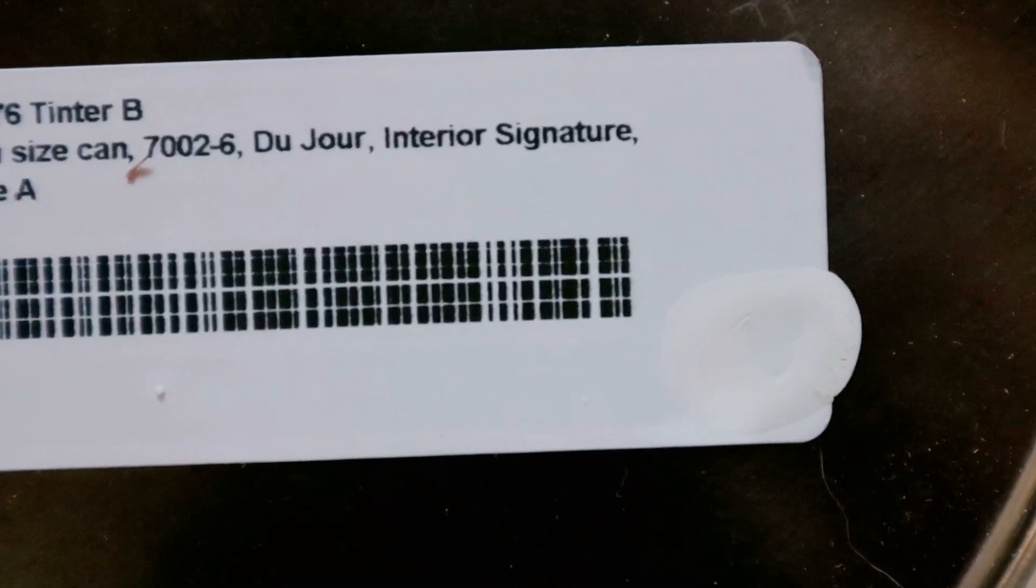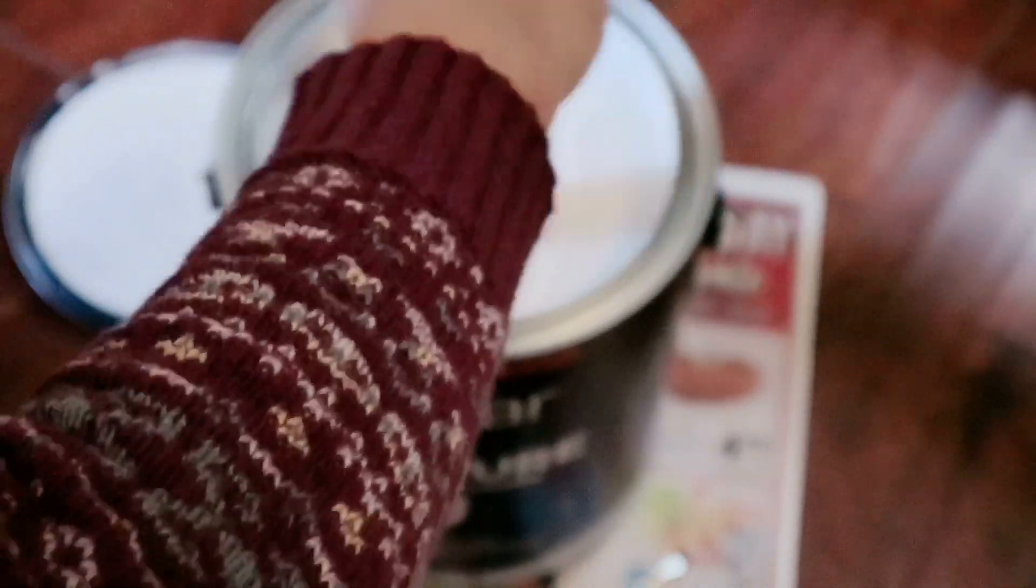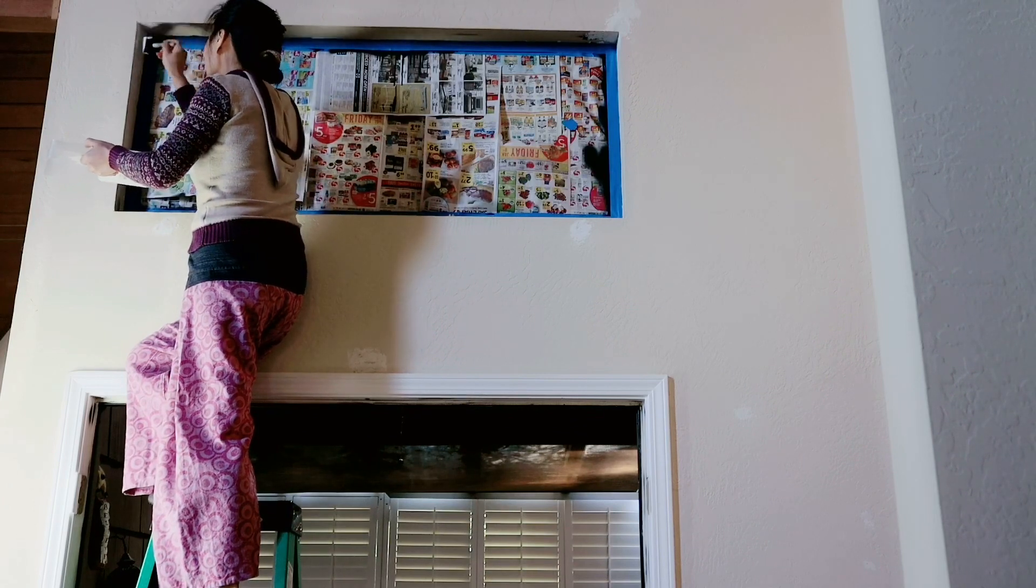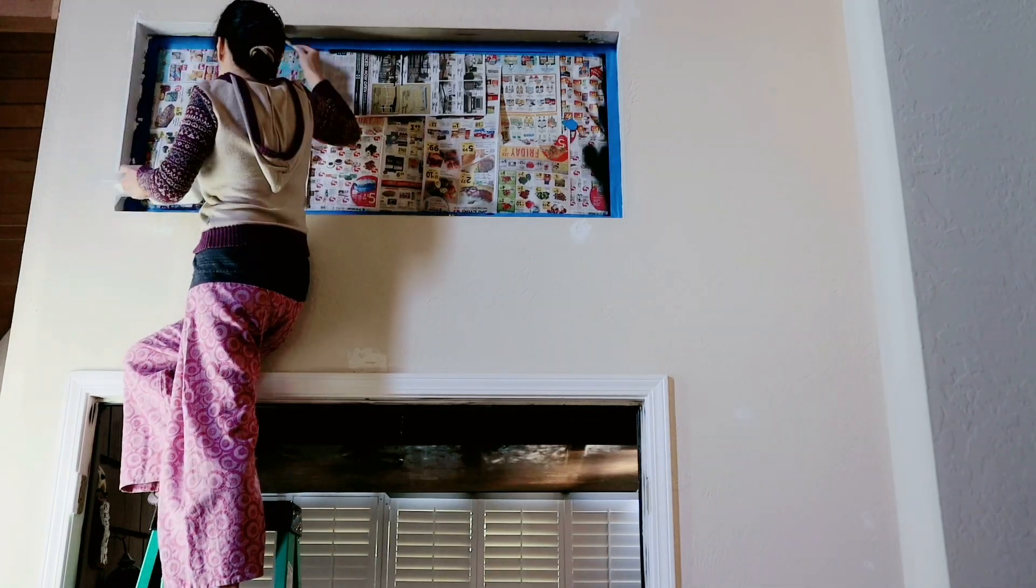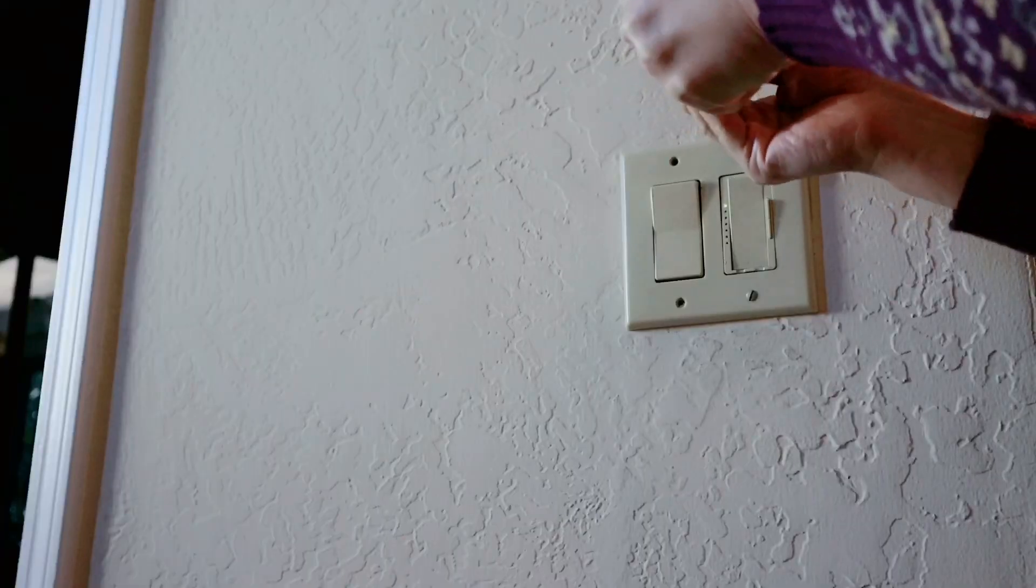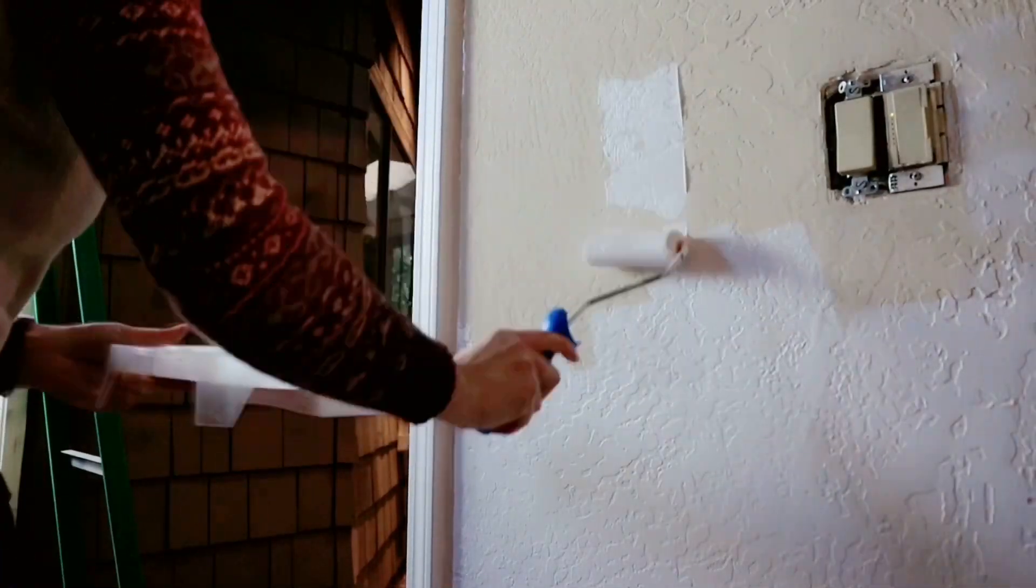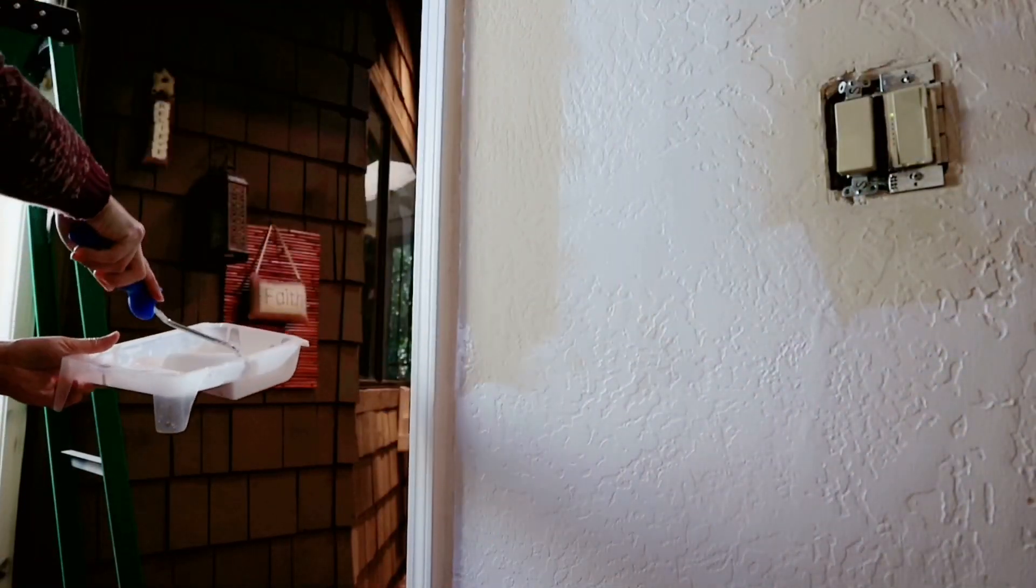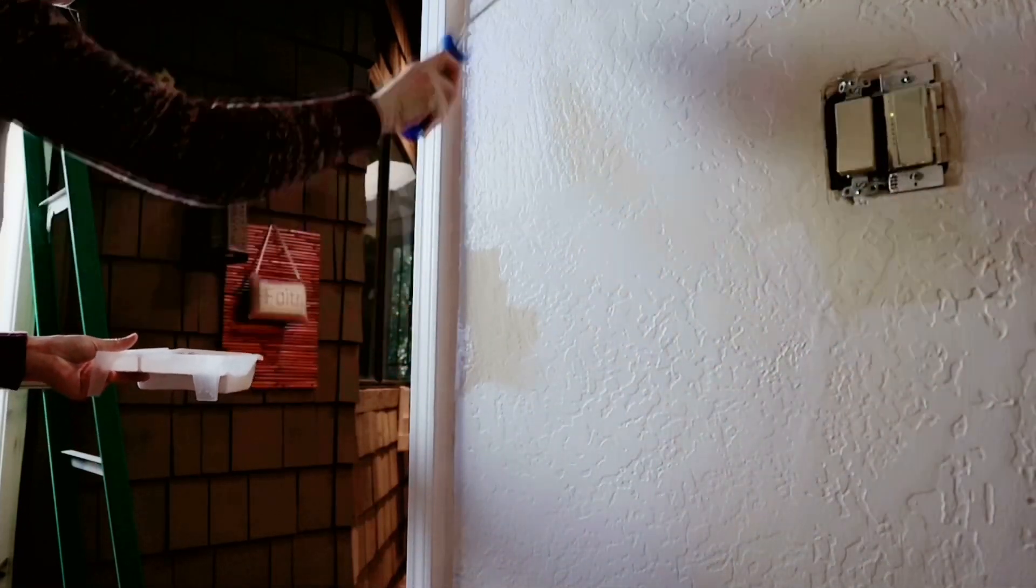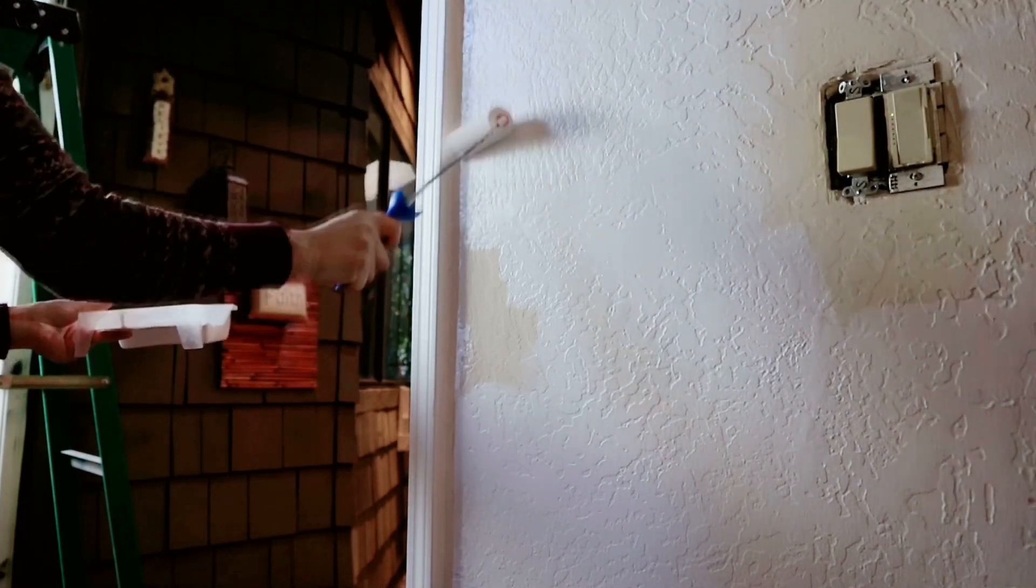The paint I bought from Lowe's. It's Valspar brand and the color is DuJour. The current wall is a beige white color. I changed it to pure white. I used to paint our walls in a flat finish. But this time I tried the eggshell finish. And I think it looks better than the flat.